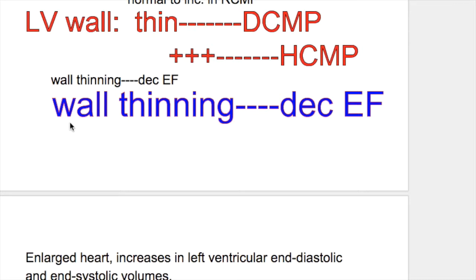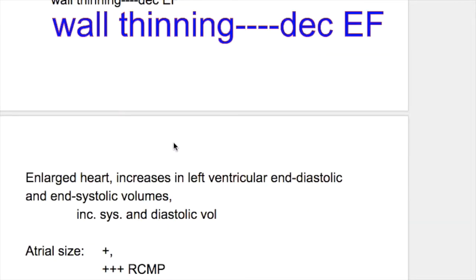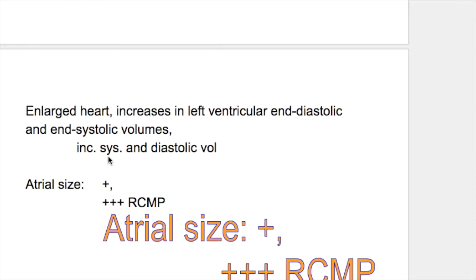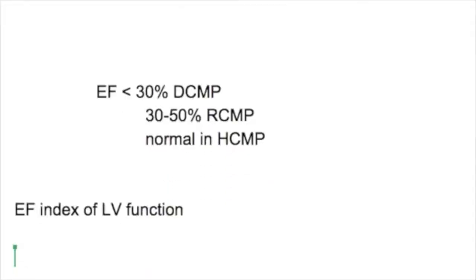Thinning of the wall decreases the ejection fraction and leads to systolic heart failure. In an enlarged heart there is an increase in systolic and diastolic volume. To differentiate cardiomyopathy types by function, ejection fraction is measured: it is less than 30% in dilated cardiomyopathy and 30 to 50% in restrictive cardiomyopathy.